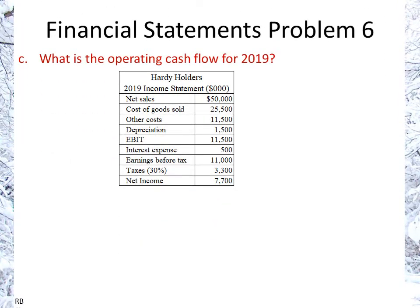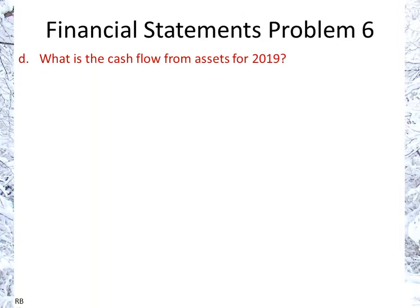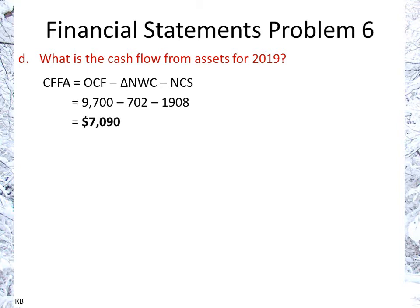For operating cash flow, we look at the income statement — EBIT, depreciation, and taxes are highlighted. Solving that gives us $9,700. For cash flow from assets, we use the answers from the previous parts: operating cash flow of $9,700 minus the change in net working capital and minus net capital spending, giving us $7,090.